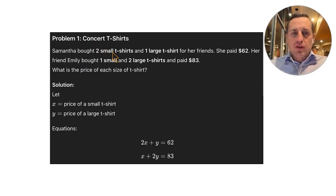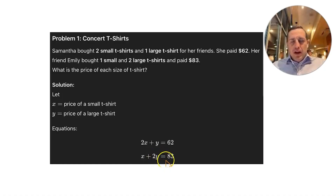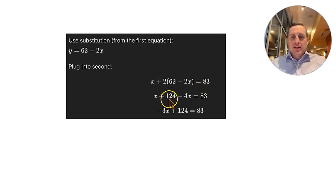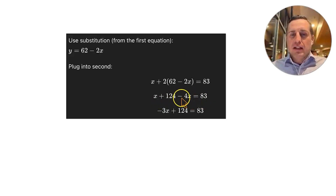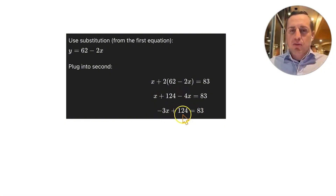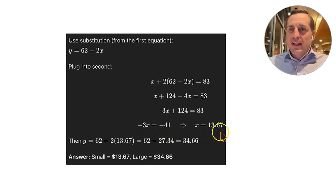Let's use substitution from the first equation. We solve for Y: Y equals 62 minus 2X. Substituting into the second equation: X plus 2 times (62 minus 2X) equals 83. That gives X plus 124 minus 4X equals 83. Combining like terms: negative 3X plus 124 equals 83. Subtract 124 from each side and divide by negative 3.